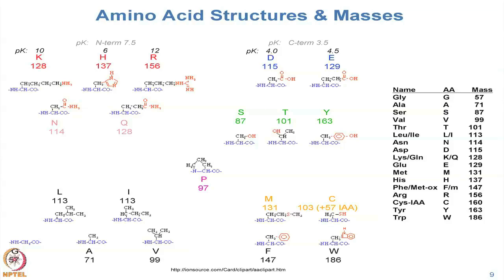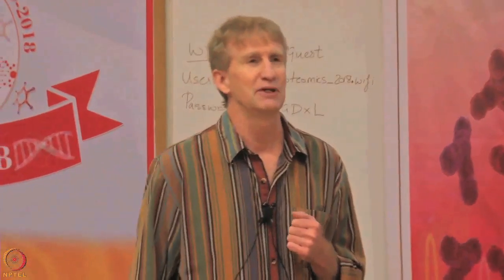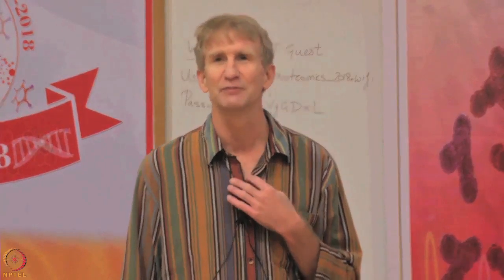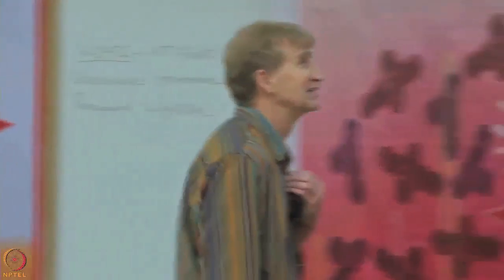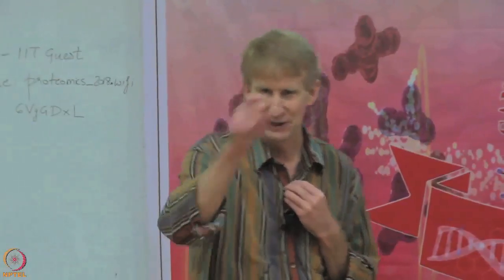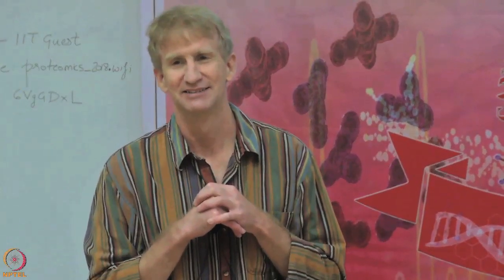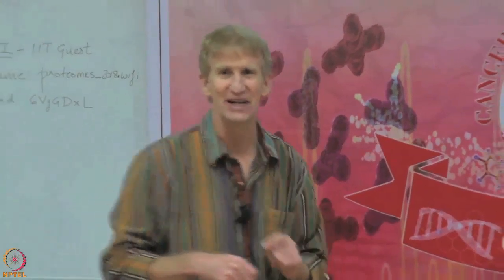We measure amino acids — and unlike DNA or RNA where there are only four bases, there are 20 amino acids. This organization of amino acids shows their different properties. My personal favorite amino acid is proline. The mass of tyrosine is 163 — you are going to need to know that in a couple of slides.